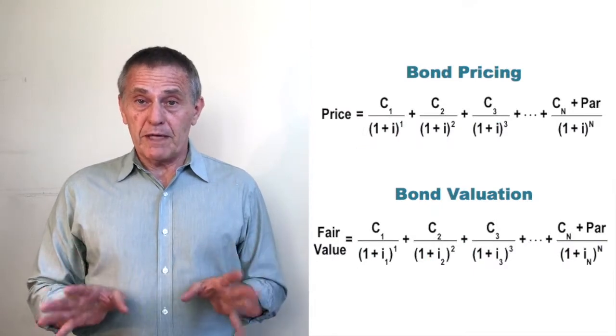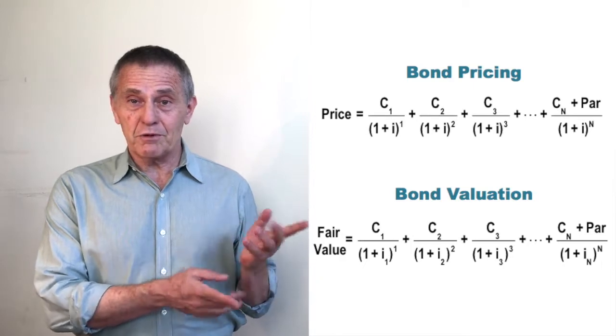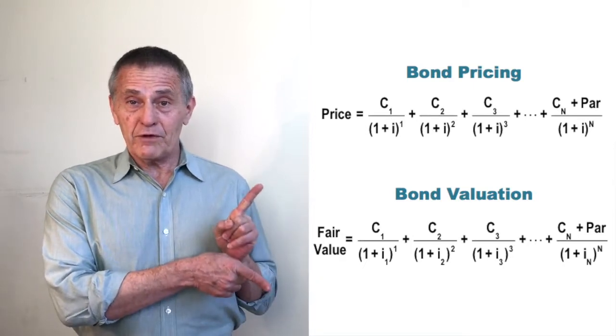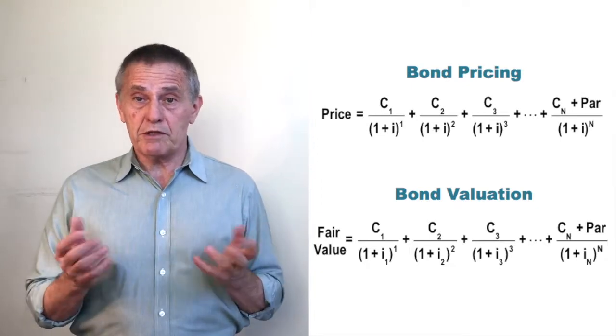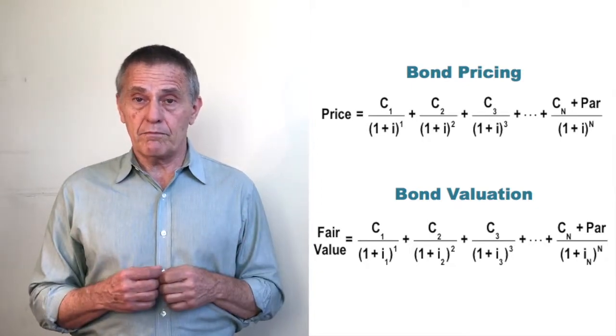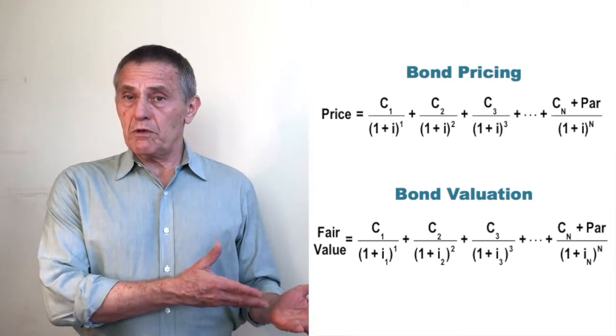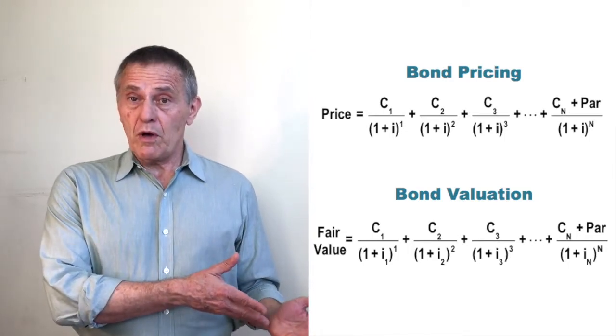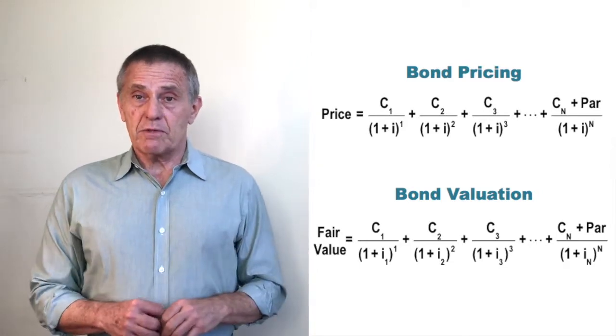But then what would be the problem when trying to estimate fair value about discounting all the cash flows by the same interest rate? Well, at a very basic level, if you were always discounting the cash flows by bonds yield to maturity, price and fair value would always be the same number, so you'd never be able to discover mispriced bonds in that fashion.